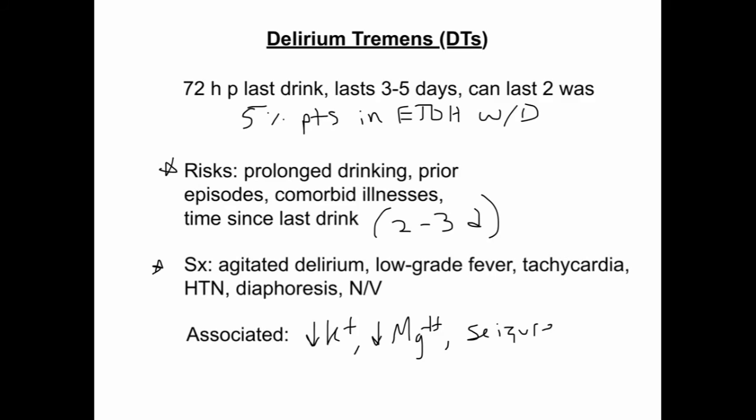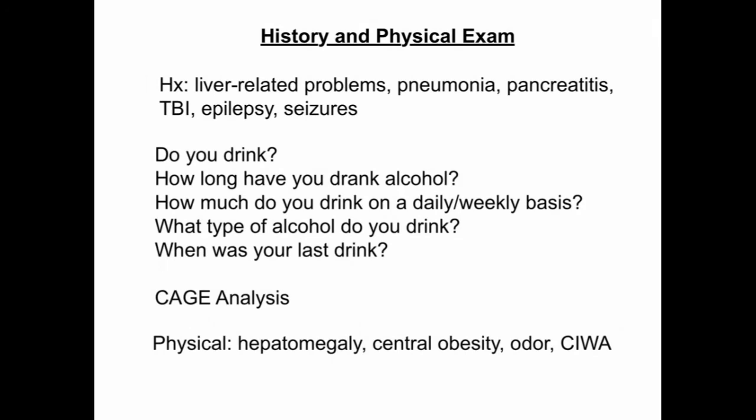When conducting a history, ask the patient about psychiatric comorbidities and history of liver-related problems, pneumonia, pancreatitis, traumatic brain injury, epilepsy, or seizures. Ask about family history of drinking or psychiatric disorders. For social history, ask whether they drink, how long they have drank, how much they drink on a weekly or daily basis, what type of alcohol, and when their last drink was. Physical exam may reveal hepatomegaly, central obesity, odor from sweat or breath, and findings from the CIWA scale.